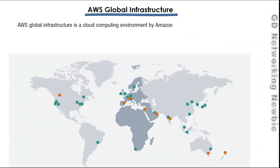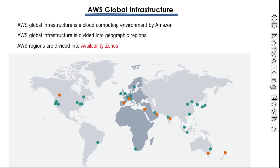On this website we can see the global infrastructure of Amazon. To provide services to its clients, Amazon has divided the whole world into geographic regions. AWS Global Infrastructure is divided into geographic regions, and those geographic regions are further divided into availability zones. I've taken this image from the Amazon website and I'll show you how these geographic regions and availability zones are divided.